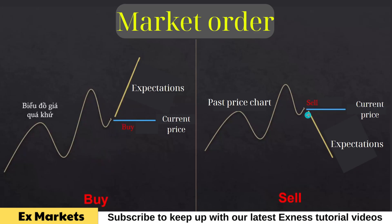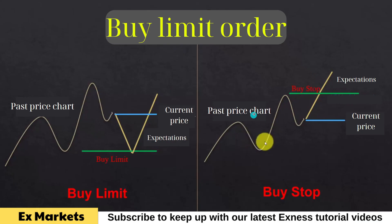For the pending buy orders group, we have buy limit and buy stop orders. A buy limit order is a pending buy order at a price lower than the current market price. For example, if we have a historical chart like this and this is the current product price, we predict that the product price may still go down but only for a short period before continuing to go up. In this case, we will place a pending buy limit order at the position where we expect the product price to go down. When the product price actually goes down to that position, the buy limit order will convert into a buy order. Subsequently, if the product price goes up, the order will be profitable, and if the price continues to go down, the order will incur a loss.